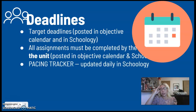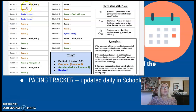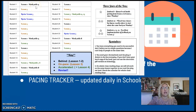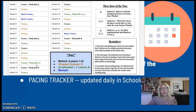You're going to know if you are on pace because there will be a pacing tracker that I update on a daily basis. Your name will actually be on the pacing tracker, and there's a key showing if you're behind on pace, ahead of pace, or if you need to revise. This is a way for us all to know where we're at, and if you need extra help, it's a way I can group you together — for example, students who are behind can work with a student who's ahead by two lessons. It allows for organic collaboration based on who needs what.